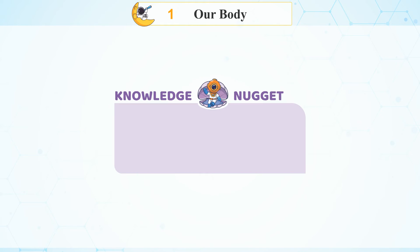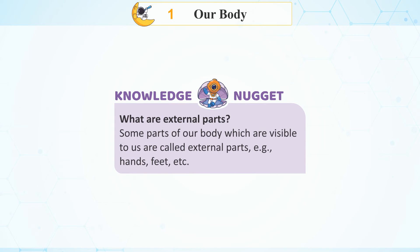Knowledge Nugget: What are external parts? Some parts of our body which are visible to us are called external parts. Examples: Hands, Feet, etc.